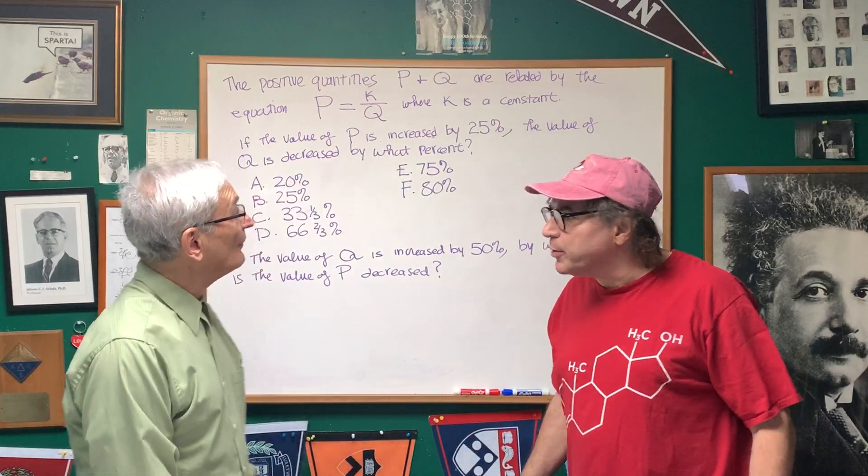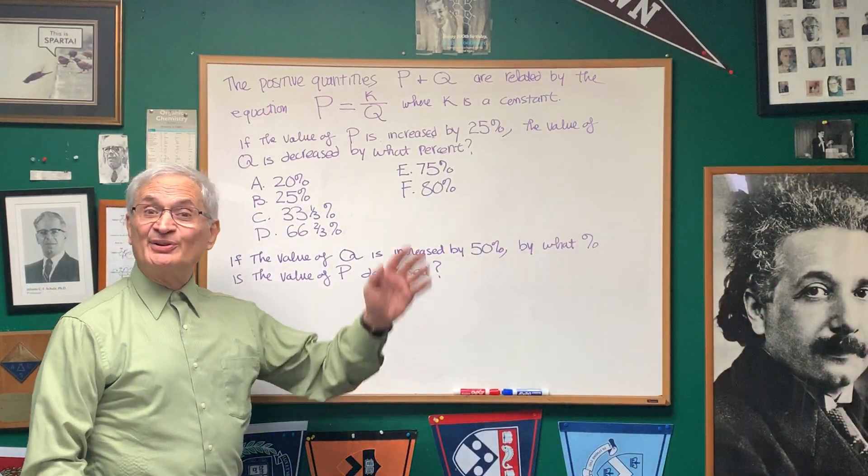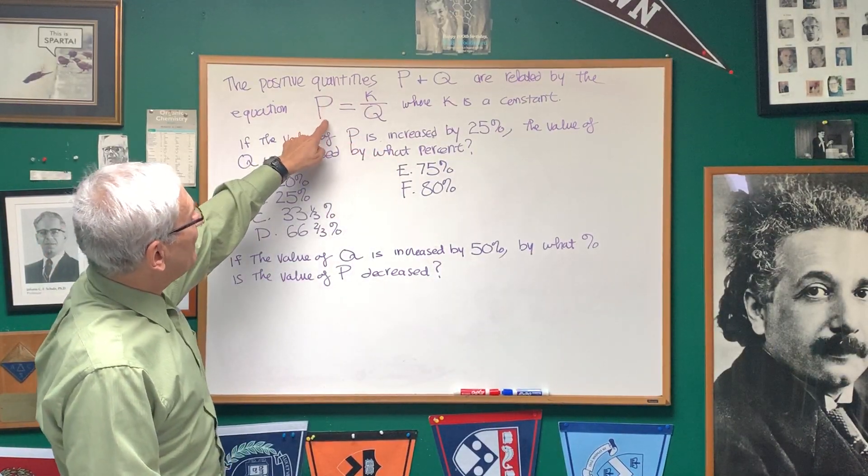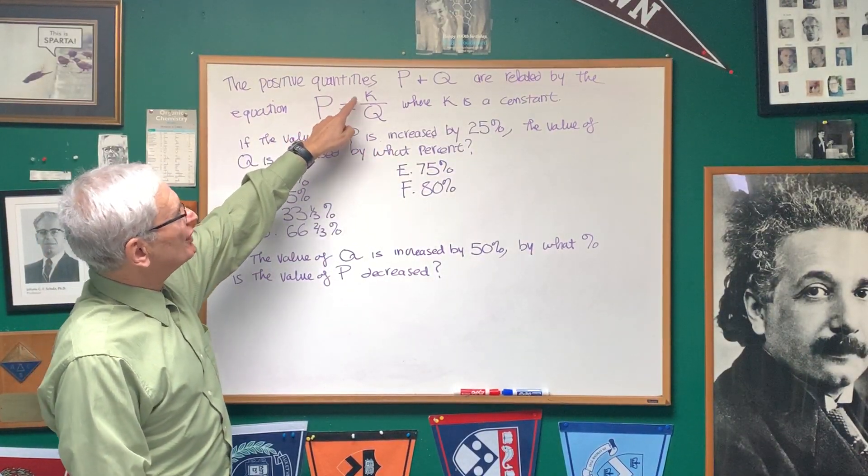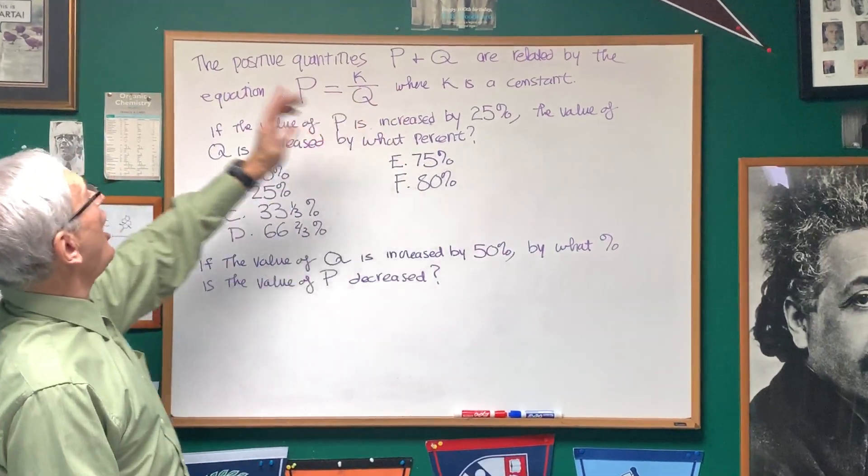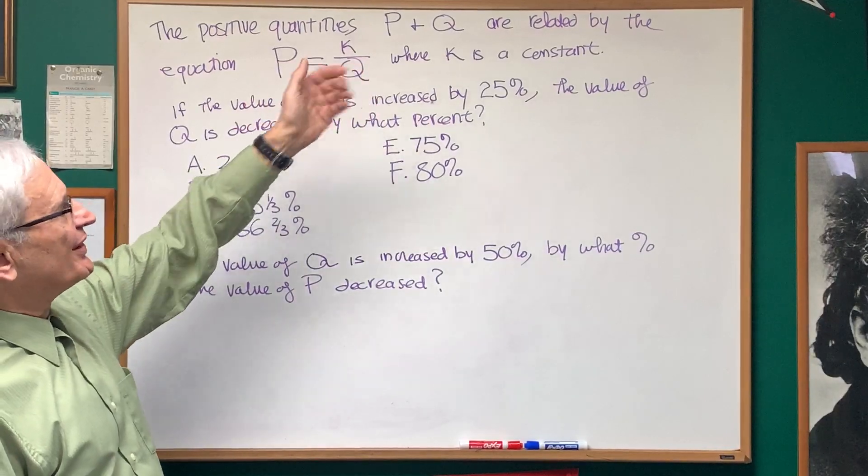All right, Professor Blois, show us what you got. Okay, yes, we're comparing two quantities that are inversely proportional to each other. P is proportional to K over Q, so the positive quantities P and Q are related by that equation, where K is a constant.